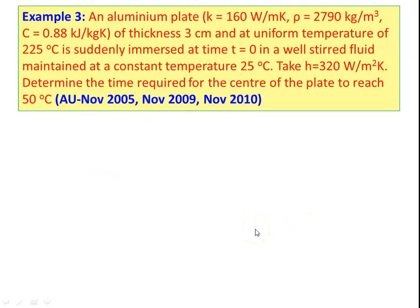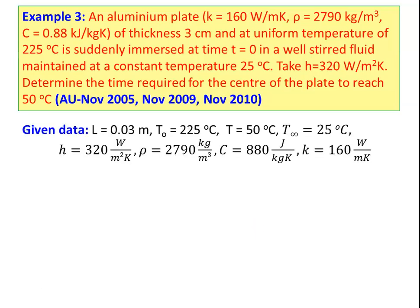We take example number three: an aluminium plate of thermal conductivity 160 watts per meter kelvin. The specific heat of the material is 0.88 kilojoules per kilogram kelvin, of thickness 3 centimeter. At a uniform temperature of 225 degree Celsius, it is suddenly immersed at time t equal to zero. The heat transfer coefficient is 320 watts per meter square kelvin. Determine the time required for the center of the plate to reach 50 degree Celsius. The given data: length of the plate is 3 centimeter, which is 0.03 meter.